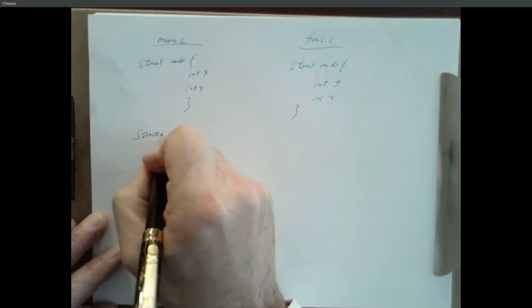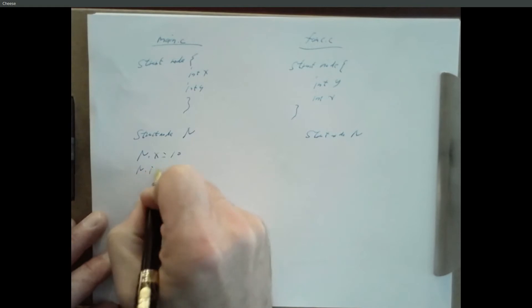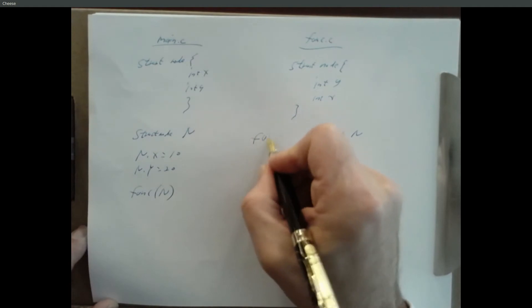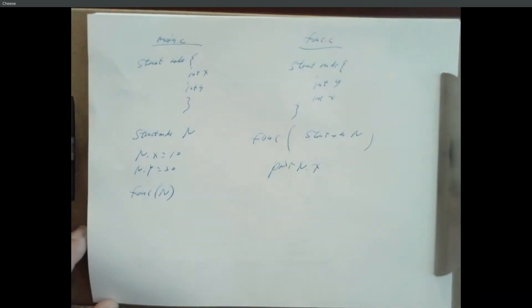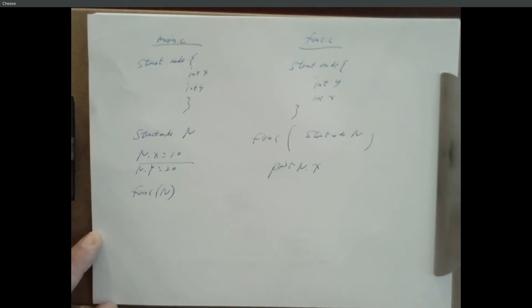Inside main I've got struct node n, and I say n.x equals 10 and y equals 20. Then I call function with n. Over in function.c, it takes a struct node n and I say print n.x. I would hope that it's going to print a 10, because I said n.x equals 10. But when this gets compiled...